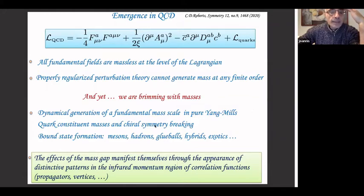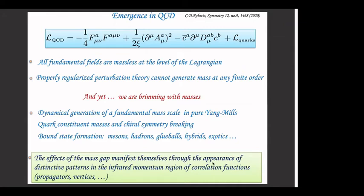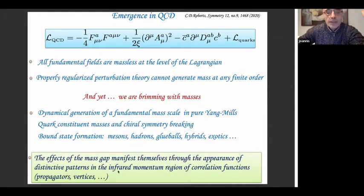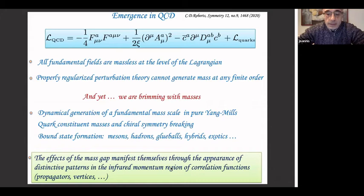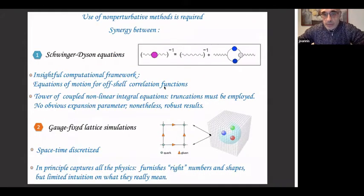What I would like to study today is how the effects of the mass gap manifest themselves through the appearance of specific patterns in the infrared momentum region of correlation functions. Correlation functions are the building blocks for most things we want to calculate using continuum methods. The question we want to address is: to what extent and how exactly do these Green's functions capture the generation or appearance of a mass scale? This is a purely non-perturbative phenomenon.